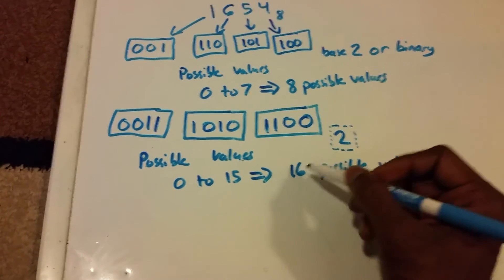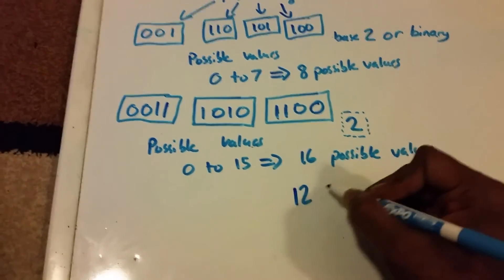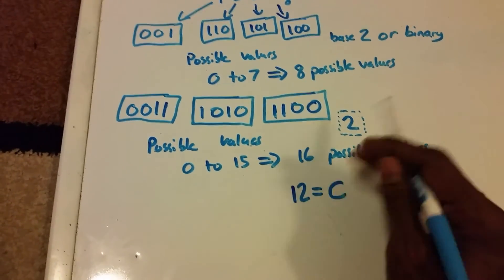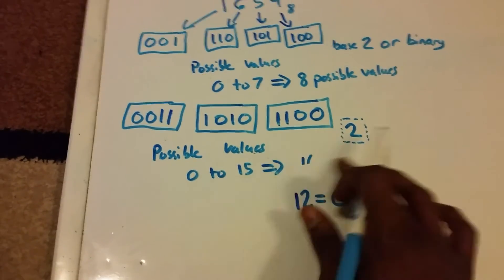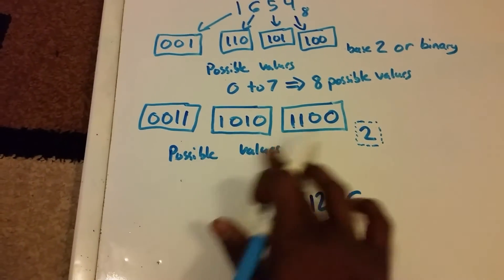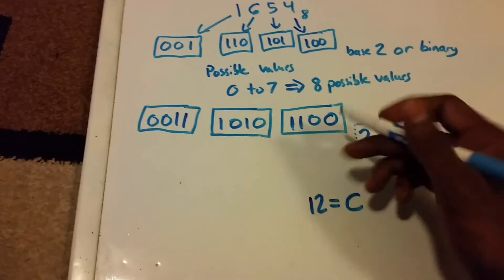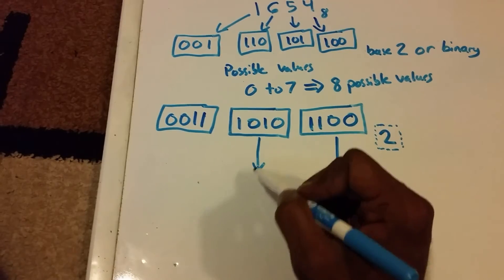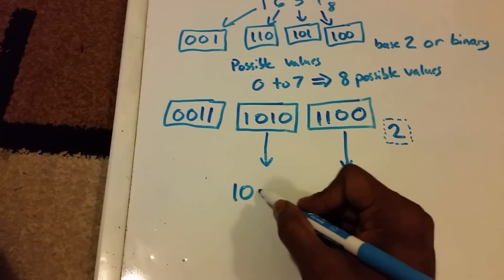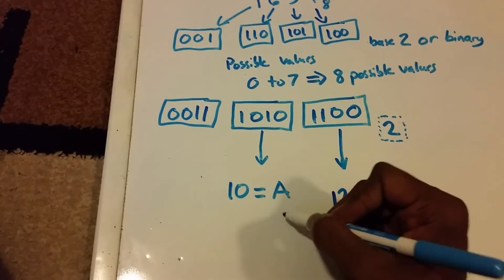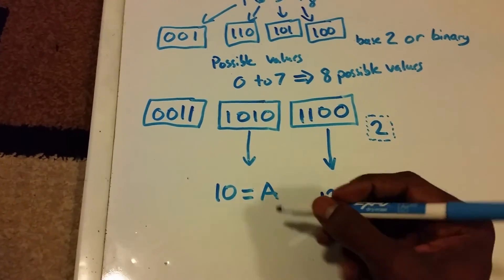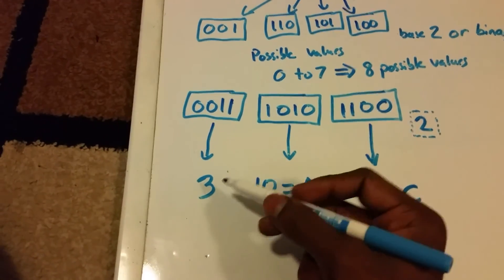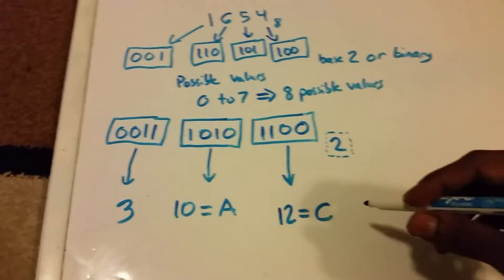1100 in binary is 12, and 12 is C in base 16. Here is 1010, and that's 10, and that's A in hexadecimal or base 16. And then here we just get 3, and 3 is 3 in base 16.